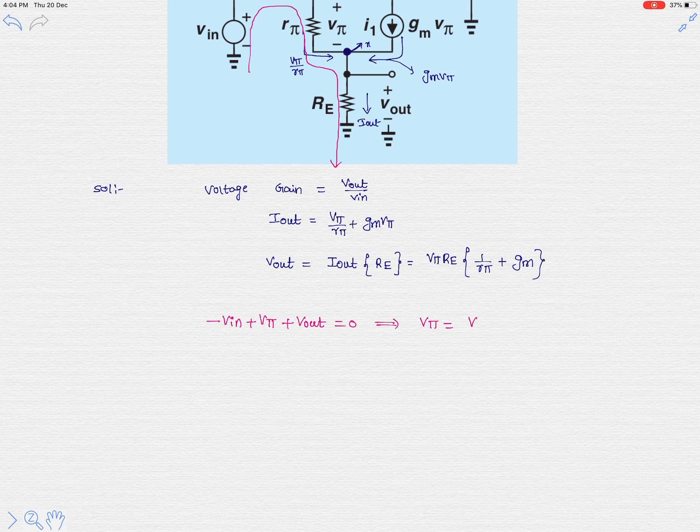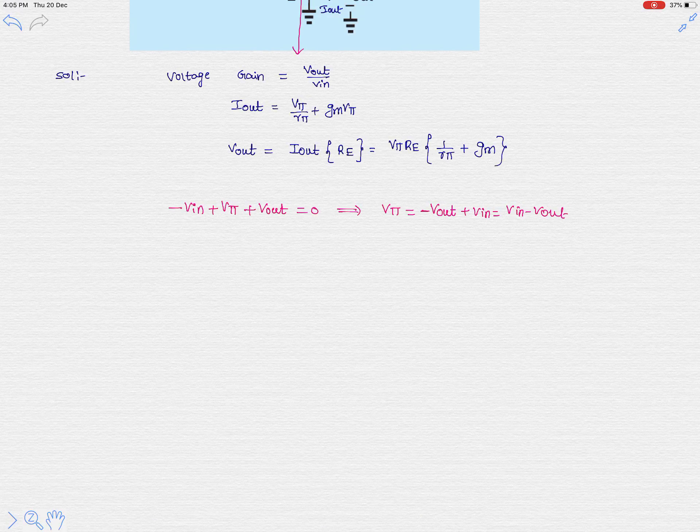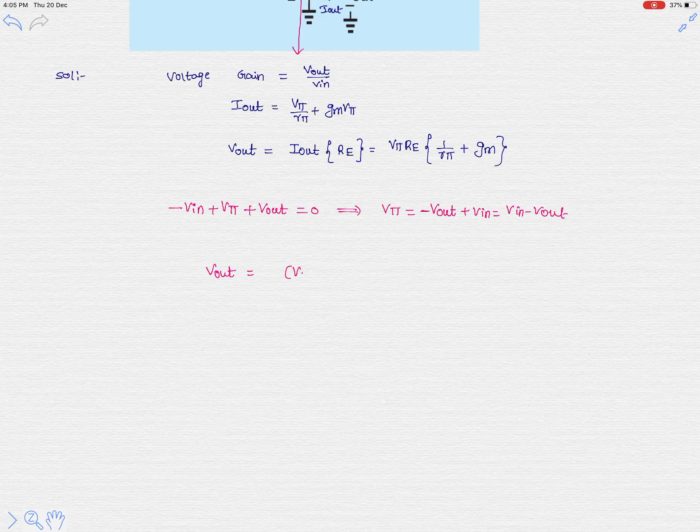Simply let's substitute in the above equation, the v_out equation. So v_π is now v_in minus v_out multiplied with r_E times 1 over r_π plus gm.